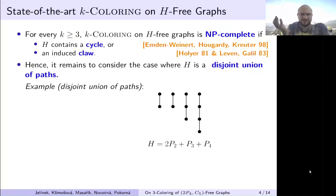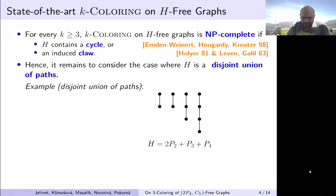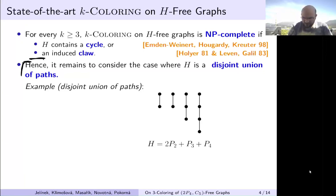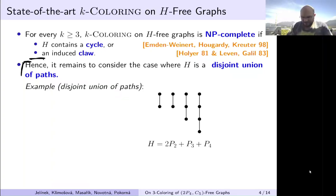There are classical results that started this area, for one forbidden H. It states that K-coloring for H-free graphs is NP-complete if H contains either a cycle or any induced claw. Therefore what remains to consider is the disjoint union of paths, called a linear forest. Here you can see an example: two paths on two vertices, one path on three vertices, and one path on four vertices. We use notation where the plus sign denotes disjoint union and '2×' means two copies of P2.